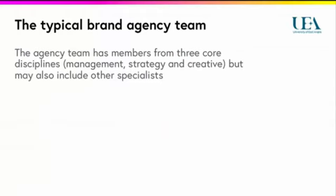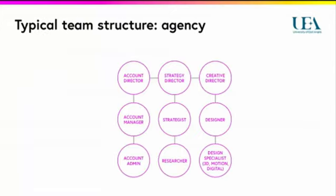On the agency side, there tend to be three core disciplines: account management, strategy, and creativity. But the team might include other specialists too. Here are the three key roles: account director — that's the client services part; strategy director — that's the thinking and planning part; and creative director — that's the design part.